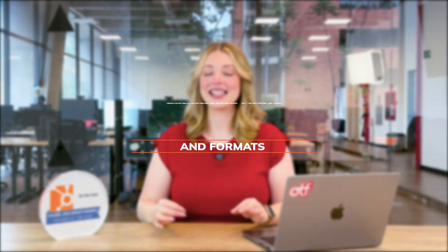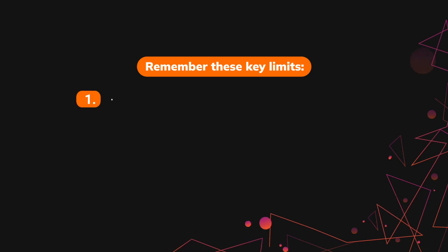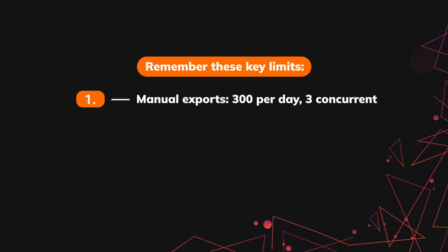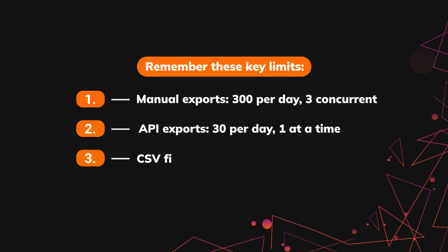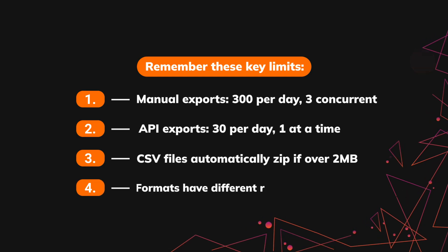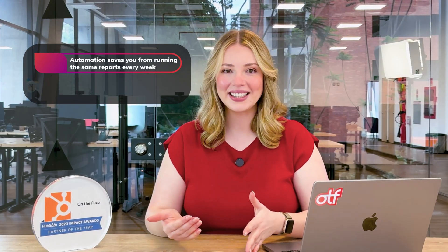Fourth: export limits and formats. Remember the key limits — manual exports: 300 per day, three concurrent exports. API exports: 30 per day, one at a time. CSV files automatically zip if two megabytes of information is being exported. And different formats have different row and column limits.